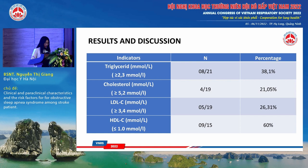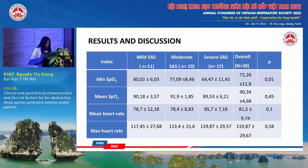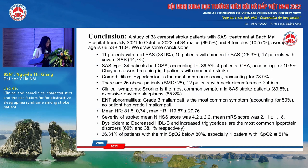Moving to the conclusion: a study of 38 cerebral stroke patients with sleep apnea syndrome treated at Bach Mai Hospital from July 2021 to October 2022, comprising 34 male and 4 female patients. Among them: 11 patients had mild SAS, 10 patients had moderate SAS, and 17 patients had severe SAS, with 34 patients having OSA and 4 having CSA. Hypertension was the most common comorbidity. There were 26 obese patients and 12 patients with neck circumference above 40 centimeters.